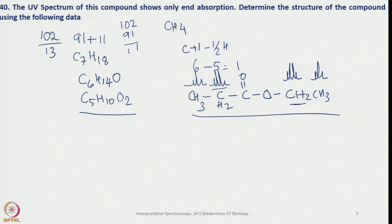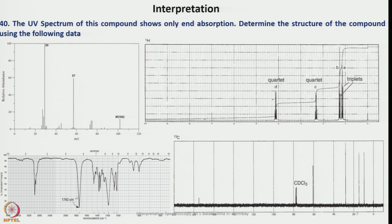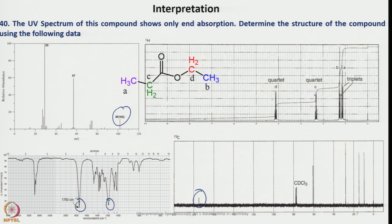Checking whether that carbon is deshielded — yes, we can see 2 triplets and the deshielded signal. With 5 carbons visible and a carbonyl quaternary carbon confirmed, we conclude this is the correct structure. This is how we use all available information — the rule of 13, hydrogen deficiency index, heteroatoms, and functional groups like C=O — to arrive at and interpret the structure.